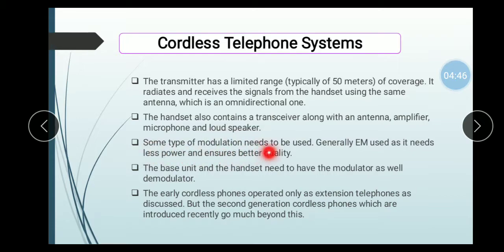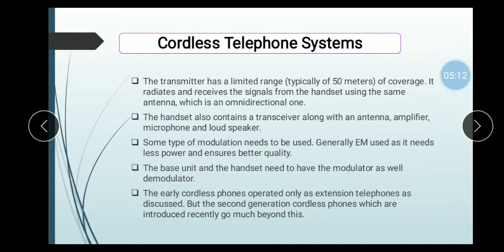Some type of modulation needs to be used. Generally, FM waves are used as they need less power and ensure better quality. When we use modulation, it will have less power and better quality, so we use FM waves. The base unit and handset both need to have a modulator as well as a demodulator. If we have modulated the signal, then it will also need to be demodulated. The early cordless phones operated only as extension telephones, but the second generation cordless phones, which were introduced recently, go much beyond this.